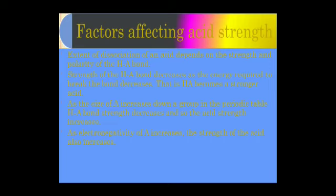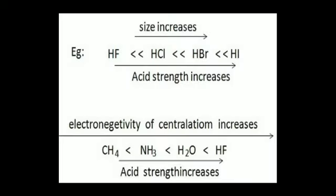As we move down a group in the periodic table, the size of the atom increases, the hydrogen-atom bond strength decreases, and acid strength increases. As electronegativity increases, the strength of an acid also increases. For example, Fluorine has the maximum electronegativity in the periodic table; as we move to more electronegative elements, acid strength increases. Similarly, as atomic size increases down the periodic table, acid strength also increases.